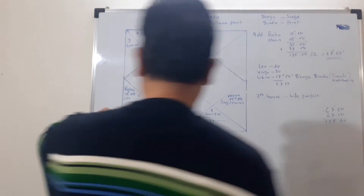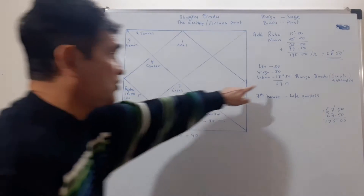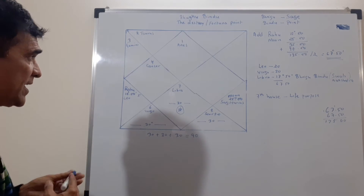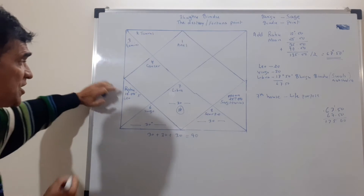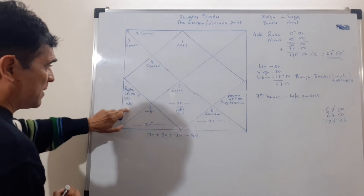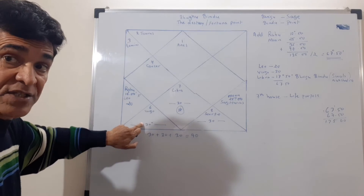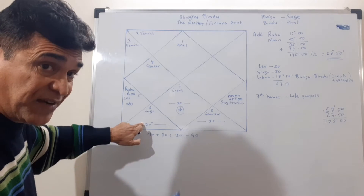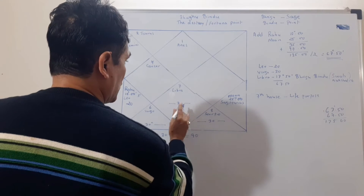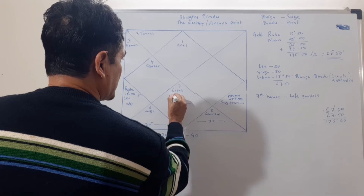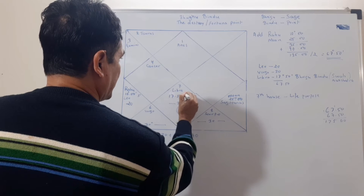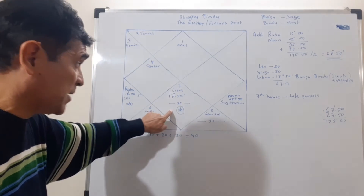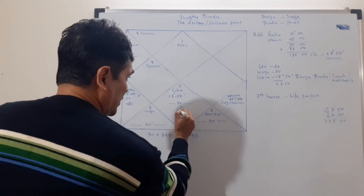We need to arrive at 67.5 to find the Bhrigu point. In this case, 10 degrees has already been achieved by Rahu in Leo, so 20 degrees remain in Leo. Add 30 for Virgo: that gives 50 degrees covered. Since 67 minus 50 leaves 17 remaining, we go 17.5 degrees into the next sign. So the Bhrigu Bindu falls at 17 degrees 30 minutes — and that sign is Libra, Tula Rashi. I have marked it with a star on the chart.